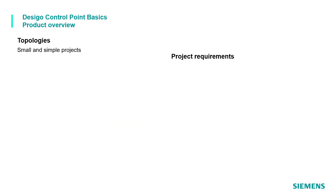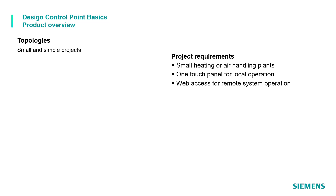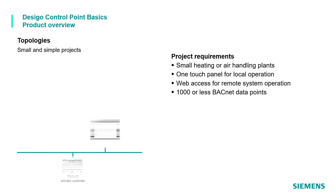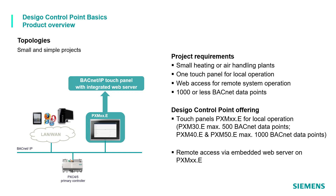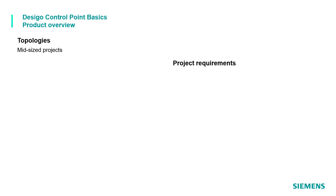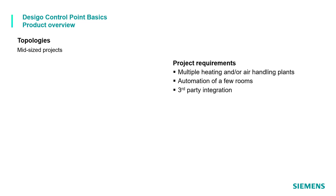A small project requiring small heating or air handling plants, one touch panel for local operation, web access for remote system operation, and 1,000 or fewer BACnet data points: the touch panel PXM30E with integrated web server is perfect for local operation. Note that the PXM30E supports a maximum of 500 BACnet data points, while the larger PXM40 and PXM50 support up to 1,000 BACnet data points.